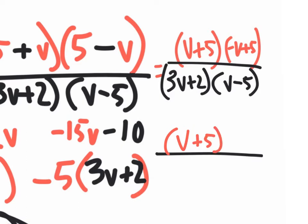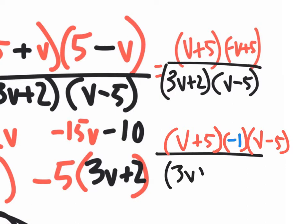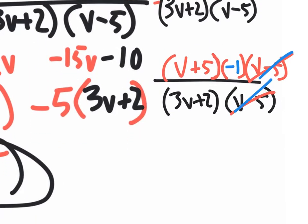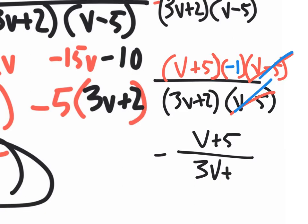I have the v plus 5 right there. And this other one, I want to factor out a negative 1 from it, and I'll have a v minus 5 left over. On the bottom, this negative 1 is being multiplied. So let me put that negative 1 in parentheses that I factored out. And on the bottom, we still have the 3v plus 2 and the v minus 5. So now I could actually cancel the v minus 5 with the v minus 5. So my final answer is the negative 1. You could put that negative 1 as a negative sign on your whole fraction with the v plus 5 up on top and a 3v plus 2 on the bottom.